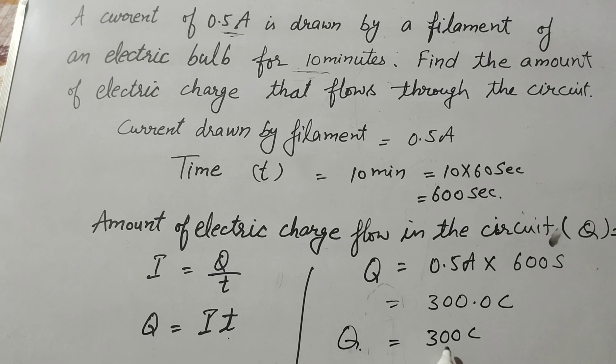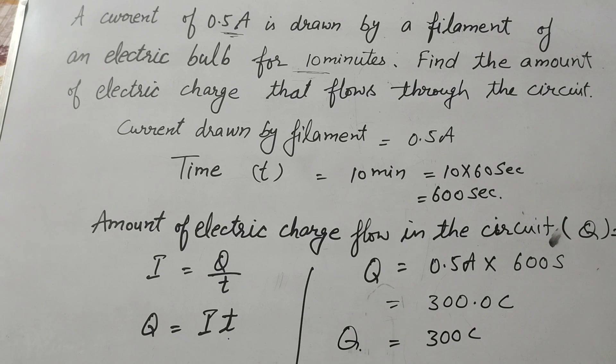Electric charge flow through the circuit is 300 coulomb. Thanks for watching. Like, comment and share my video. Subscribe my YouTube channel. Thank you.